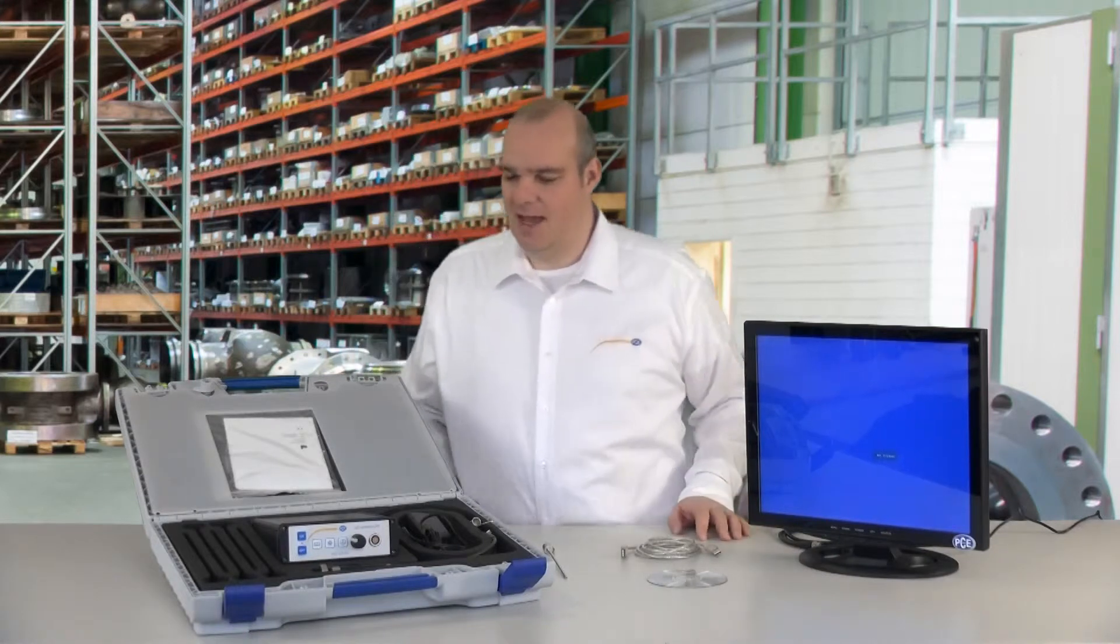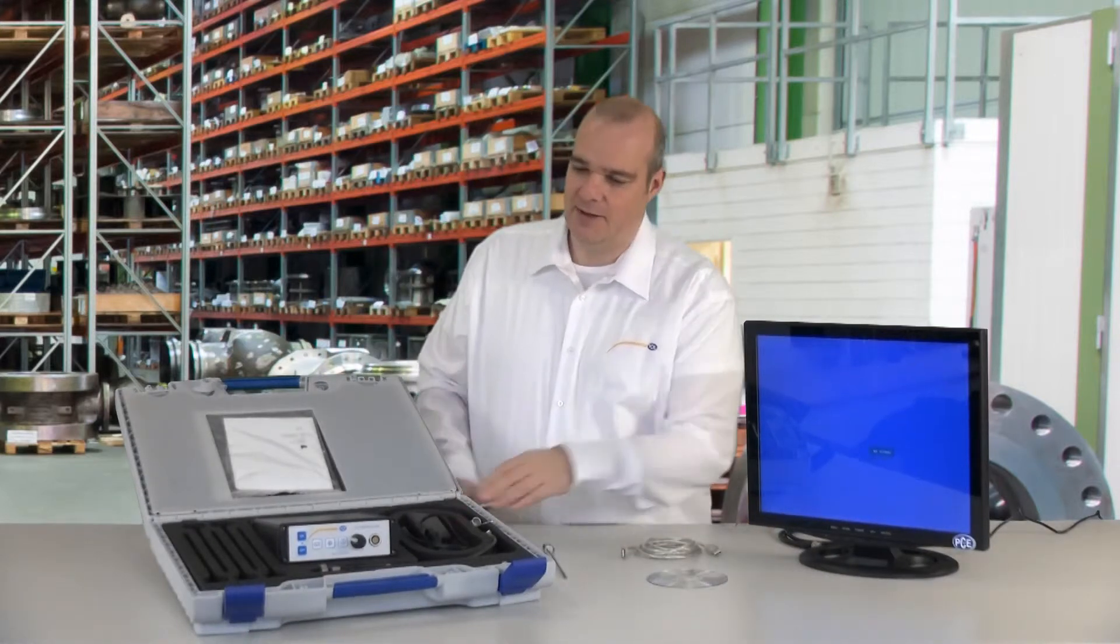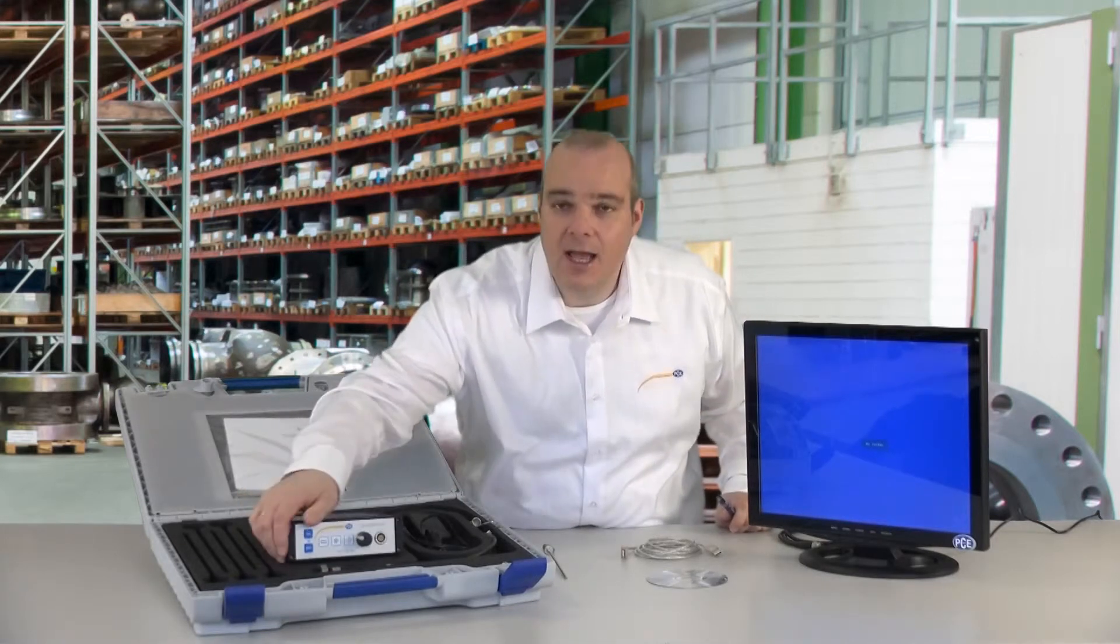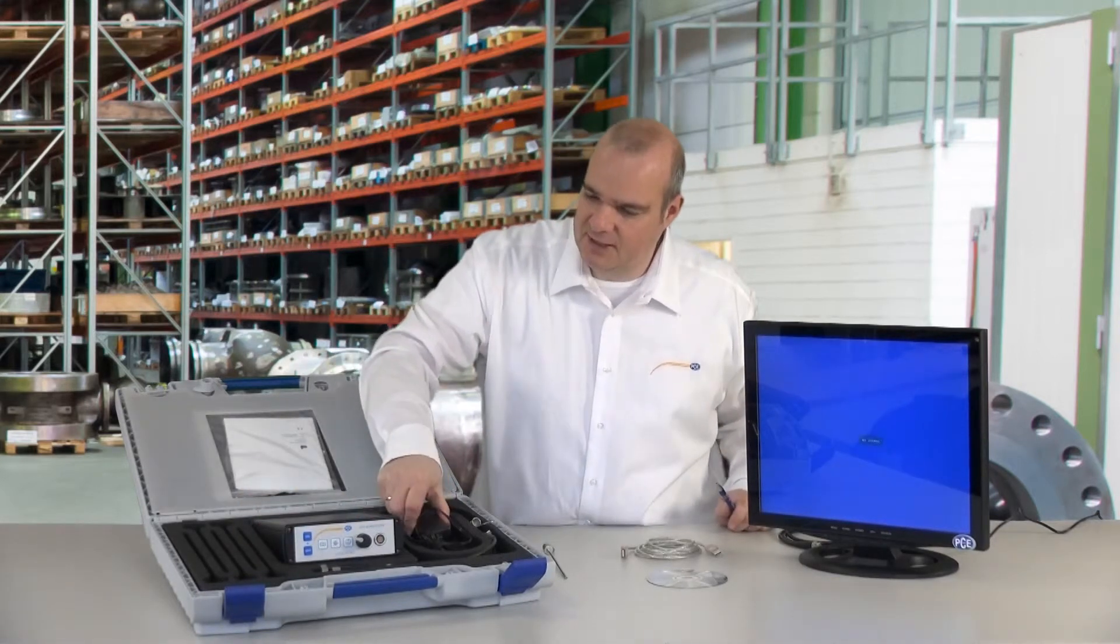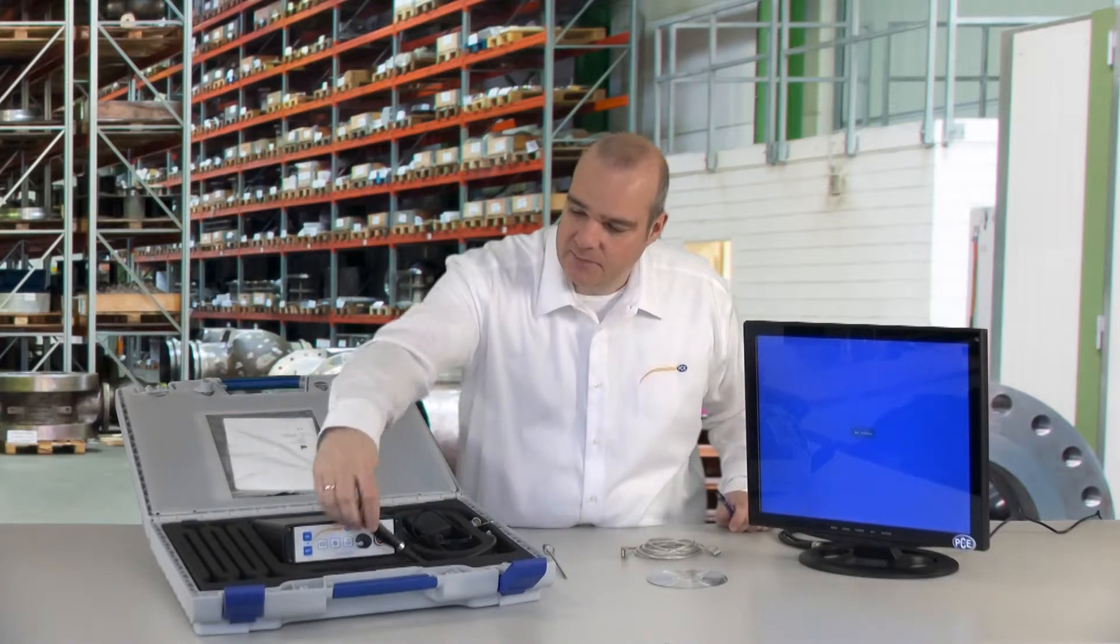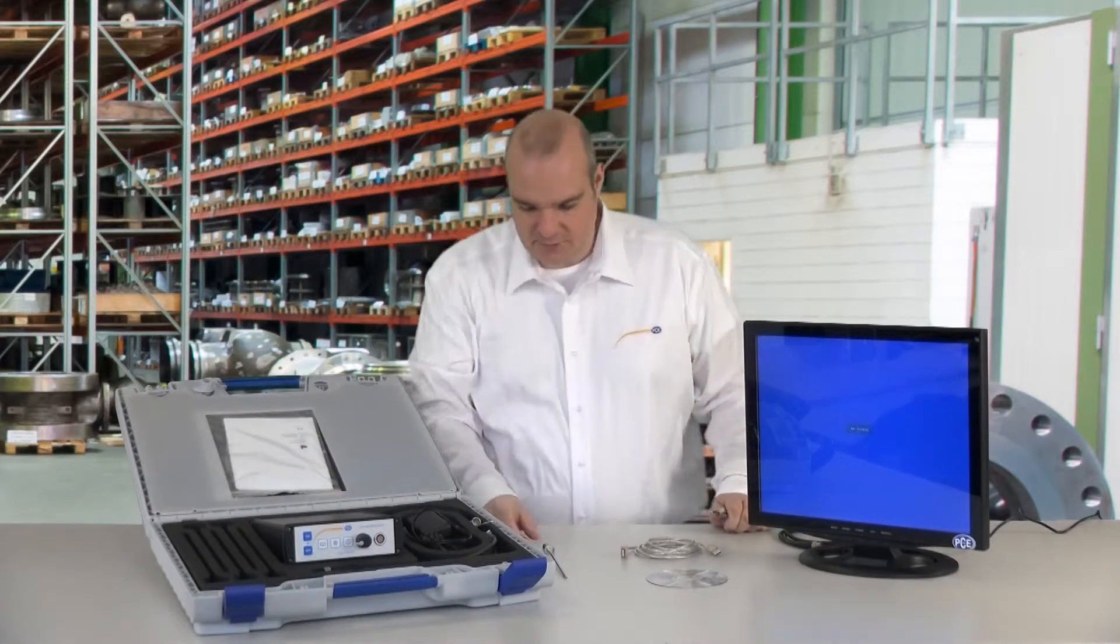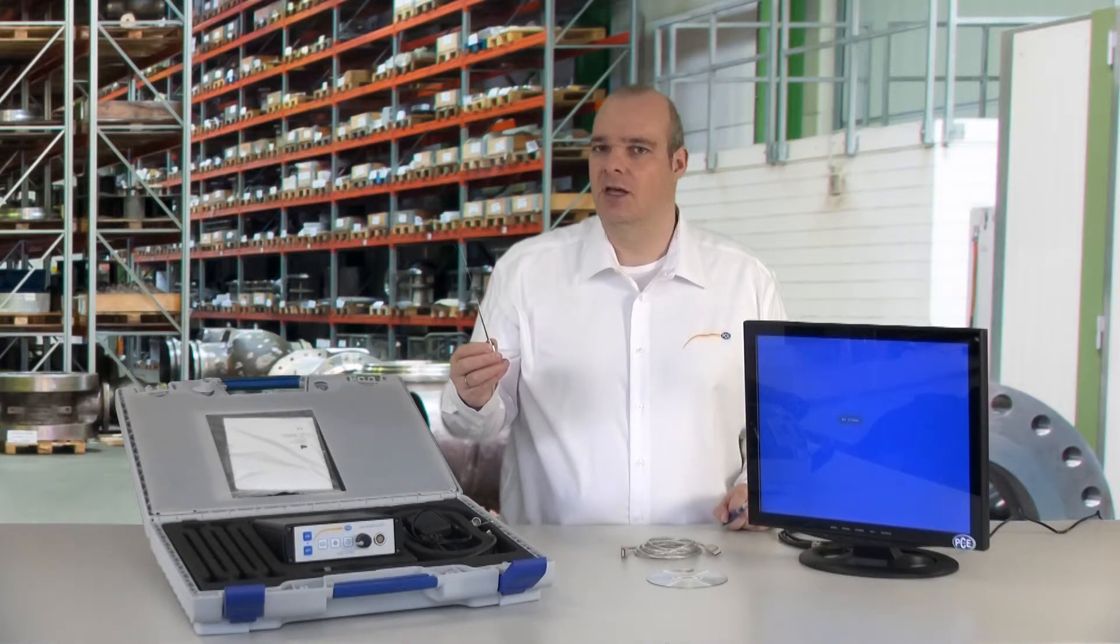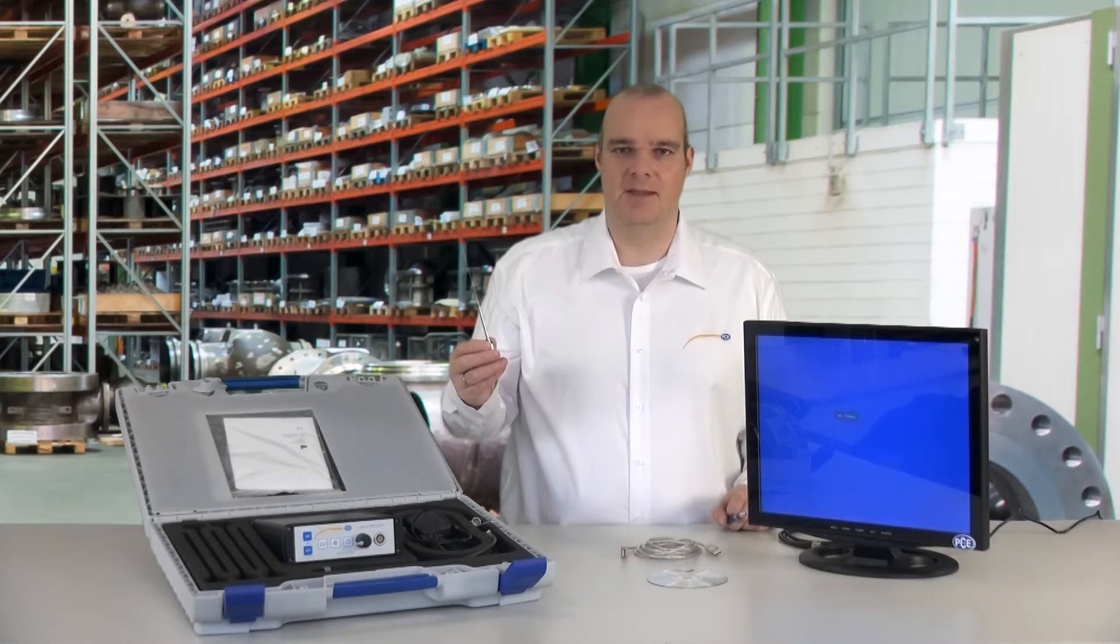Delivered is it all in a robust hard shell case. And it all looks as follows: I have my control unit, the power adapter for it, the probe holder, and naturally a probe. PCE Instruments have from 0.7 to 4mm in their program.